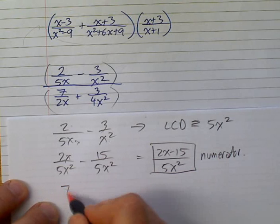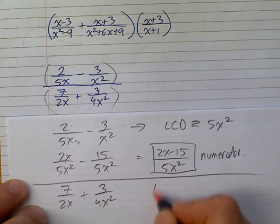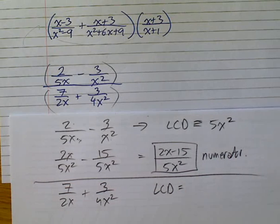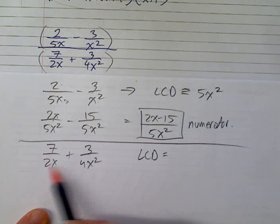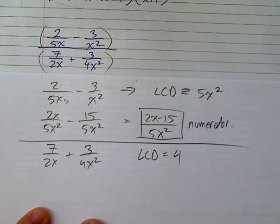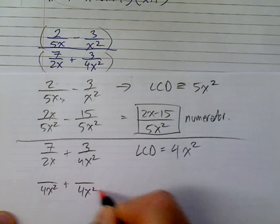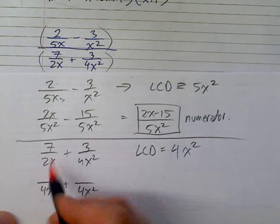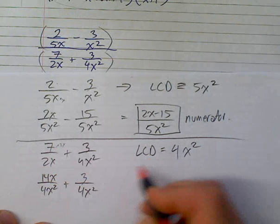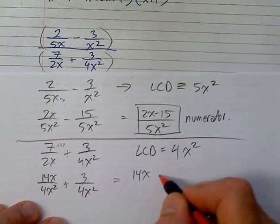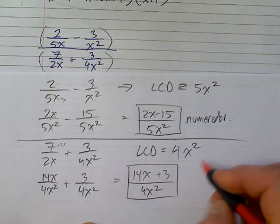Okay, and now we deal with the denominator: 7 over 2x plus 3 over 4x squared, and we're looking to see what the LCD is. So if I want to find the LCD here, I need to, again, look at each individual term. 2 and a 4, well, 4 would be the lowest common denominator. x and x squared, 4x squared. So what we do is we put that lowest common denominator under each term. And I have to multiply this by 2x, so 7 times 2x is 14x. This one stays the same. I don't have to do anything. So this now becomes 14x plus 3 over 4x squared. This is your denominator.